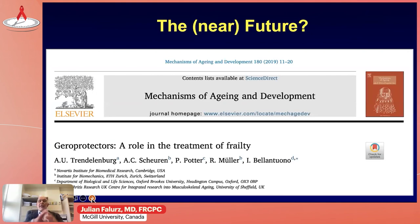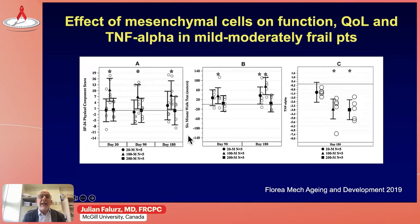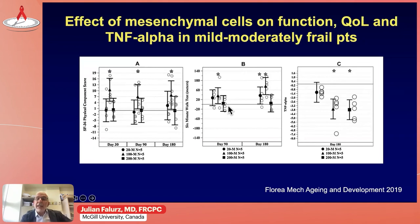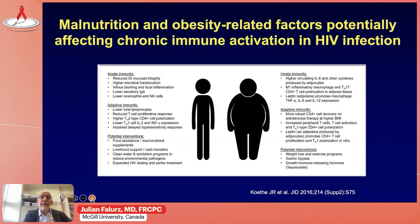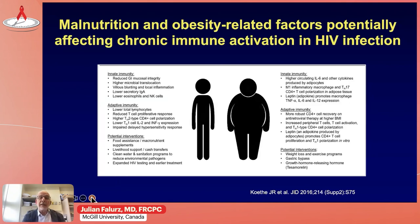In the near future, some of these newer interventions may actually be beneficial for the treatment of frailty. Preliminary results using mesenchymal cells showed an improvement in the physical component of quality-of-life questionnaires, improvement in gait speed, and a reduction in TNF-alpha. We also shouldn't forget that malnutrition and obesity may interact with and impact chronic immune activation in HIV, and lifestyle changes may be effective in modulating these.